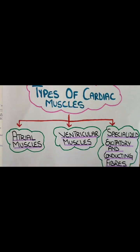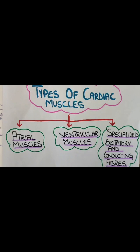The heart is composed of three major types of cardiac muscles: the atrial muscles, the ventricular muscles, and the specialized excitatory and conducting fibers. The major function of the atrial and ventricular muscles is the contraction of the heart and pumping of blood, which occurs similarly to skeletal muscles except that the duration of contraction is much longer. The specialized excitatory and conducting fibers contract very feebly due to fewer contractile fibrils.